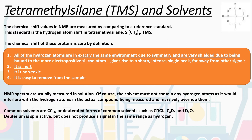NMR spectra are usually measured in solution. Because hydrogen is NMR active, you don't want the solvent to contain any hydrogen atoms, as this would interfere with the hydrogen atoms in the actual compound you're trying to measure and potentially massively override them. So you wouldn't see any signals for your compound — you'd just see the solvent peaks. Typically we use solvents with no hydrogens attached, such as carbon tetrachloride, though that's being phased out due to its toxicity.